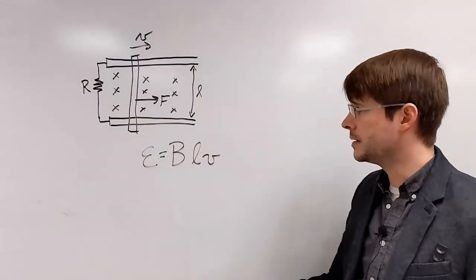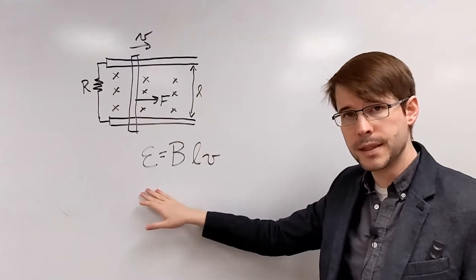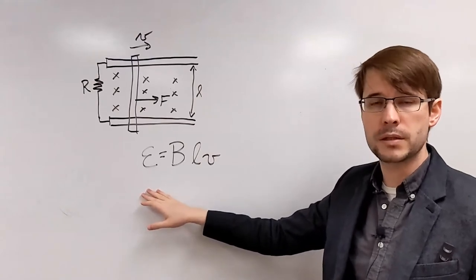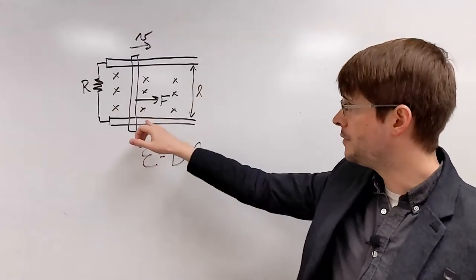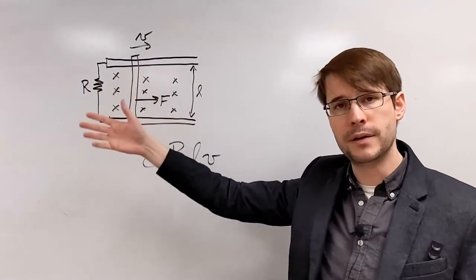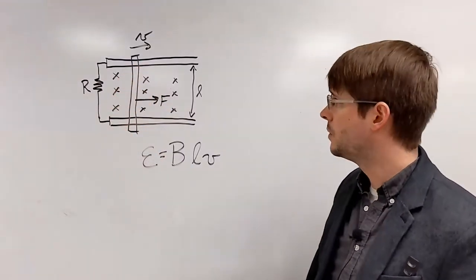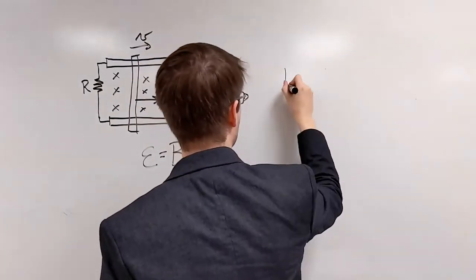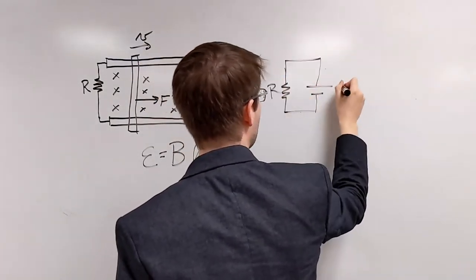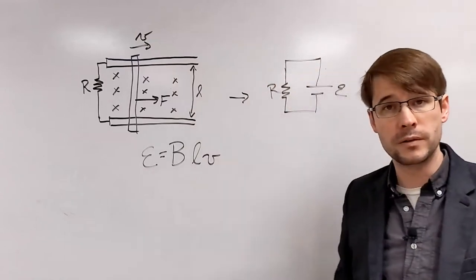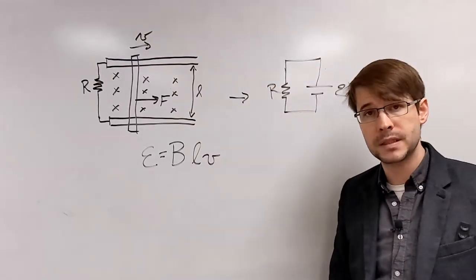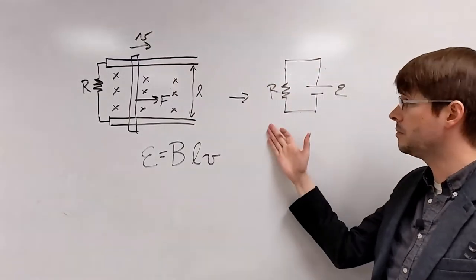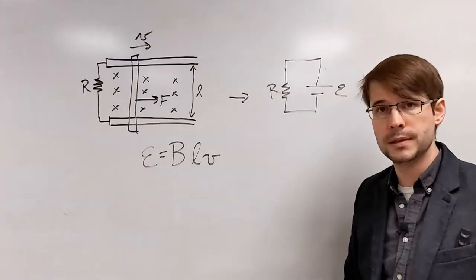All right. So as the bar is moving like this, this effectively is the same as a resistor circuit, a resistor and a battery circuit, where you have this bar is acting as the EMF, acting as the battery. And so we can redraw this as an equivalent circuit like this. These are effectively equivalent situations.